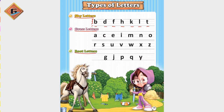Now look at the grass letters. All the grass letters are in the center two lines — we start with the second line and end at the third line. The first grass letters are: A, C,